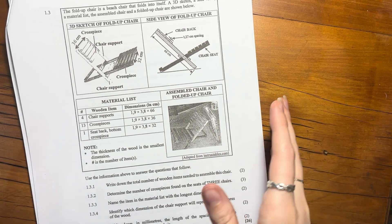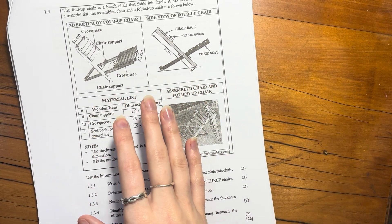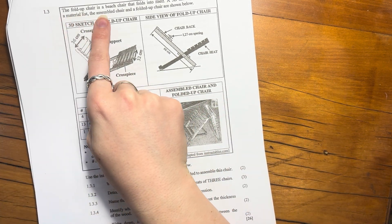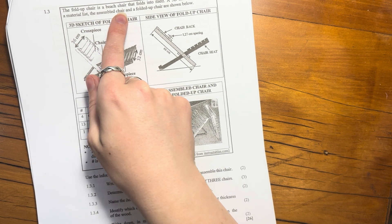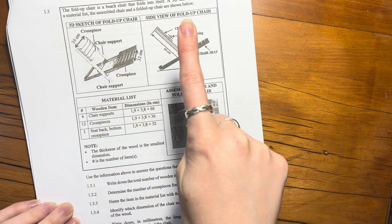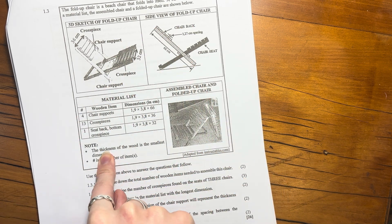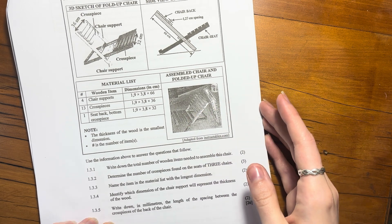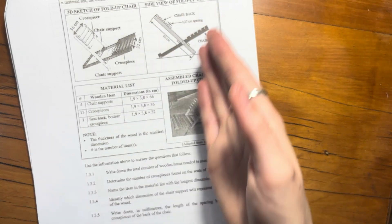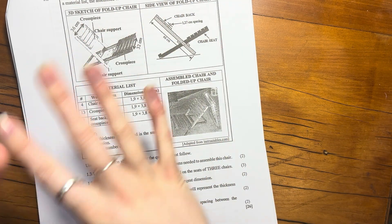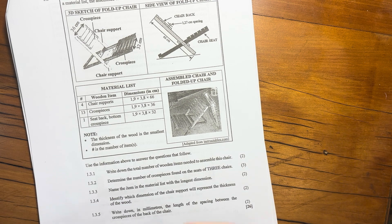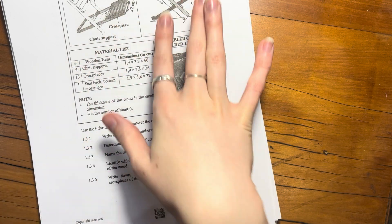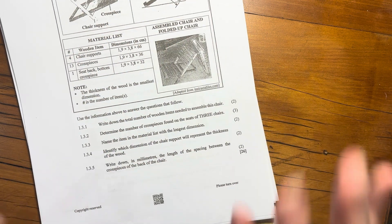All right, let's look at 1.3. So 1.3 is one of these model interpretation questions. I hate these questions because I'm not so good at seeing 3D, but we will persevere. The fold-up chair is a beach chair that folds into itself. A 3D sketch there, a side view there, and a material list there in the assembled chair and a folded chair are shown. So I don't spend too much time looking at this until I look at the questions because the questions help you understand what you need to see. When I see this, it gives me heart palpitations, but let's rather just go into the question and do what we need to do.